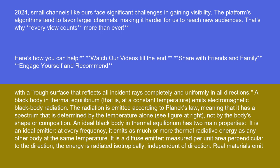An ideal black body in thermal equilibrium has two main properties. It is an ideal emitter: at every frequency, it emits as much or more thermal radiative energy as any other body at the same temperature. It is a diffuse emitter, measured per unit area perpendicular to the direction; the energy is radiated isotropically, independent of direction.